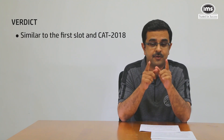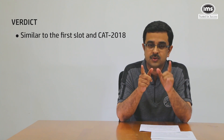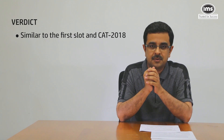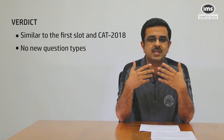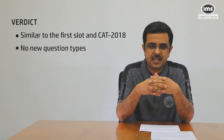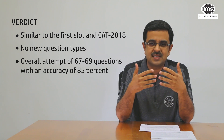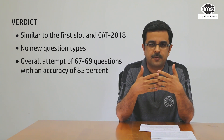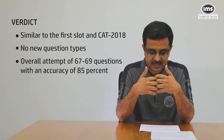The overall verdict: the second slot of CAT 2019 was similar to the first slot and CAT 2018 in terms of difficulty, though different sections had different effects. There were no surprises or new question types in CAT 2019. An overall attempt of about 67 to 69 questions with an accuracy of about 85% should be classified as a good performance and would likely fetch around 99th percentile. IMS students reported great similarity between the SimCATs and the actual CAT — several felt the CAT was an extension of SimCATs and e-Maximizer workshops.